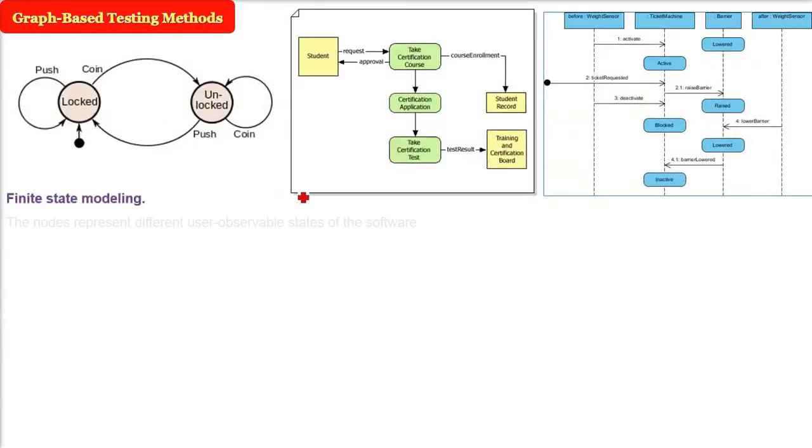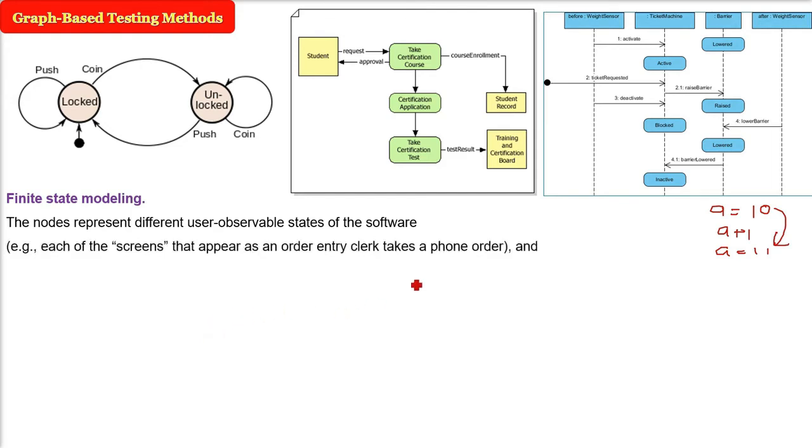You can also use the finite state modeling. Again, we can make the graph. So the node will represent different user observable states of the software, because there will be different states. For example, a can be 10, a can be 11. So these are user observable states. Each of the screens that appear, say, some entry clerk takes a phone order or takes an order. This can be node.